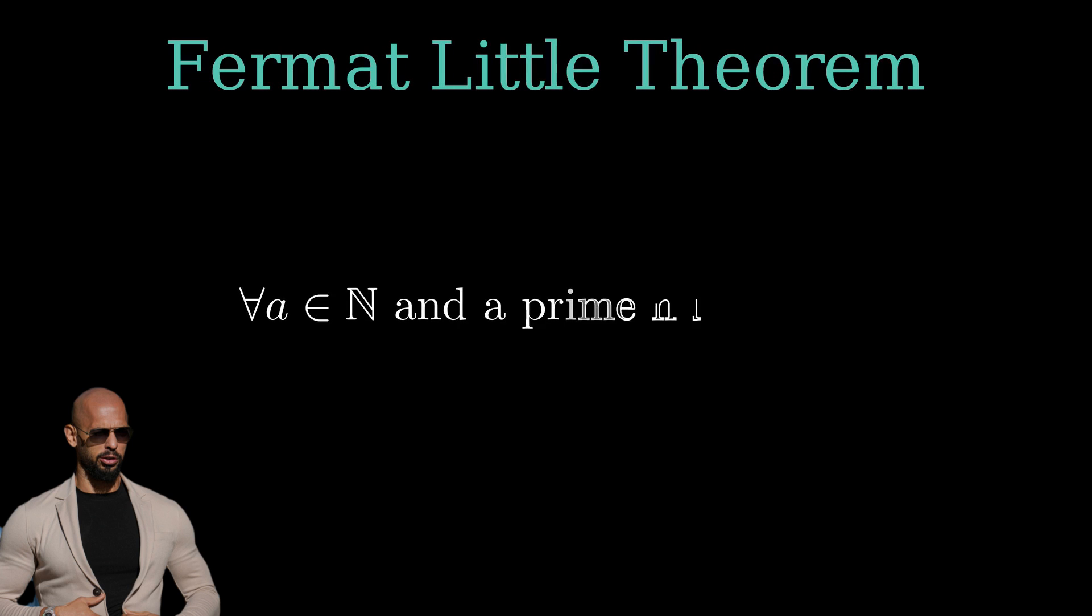Fermat's little theorem tells us that for any positive integer a and a prime number p, a raised to the power of p is congruent to a modulo p. That's gold when you're tackling olympiad problems. Start small. See where it leads. Inspiration often comes from the least expected places.